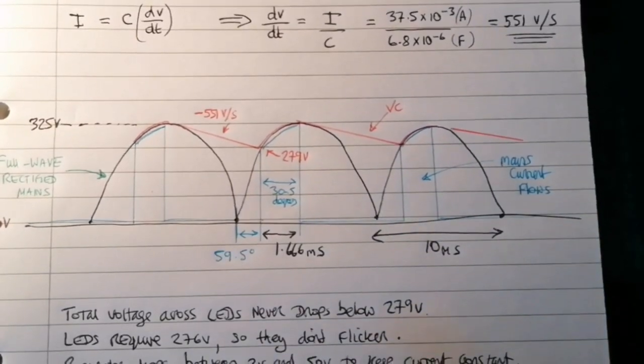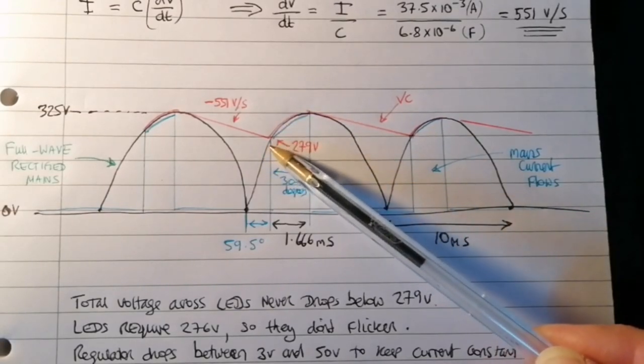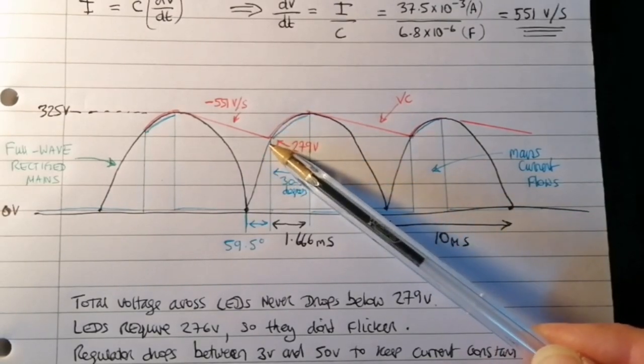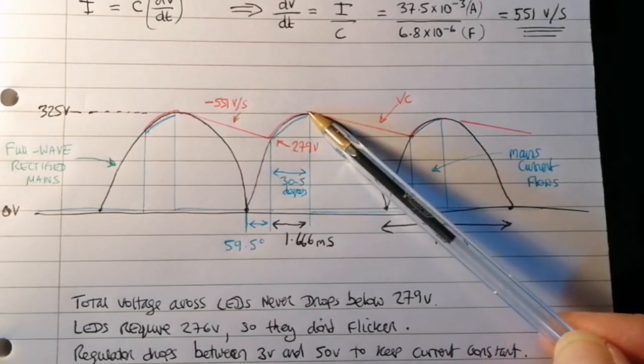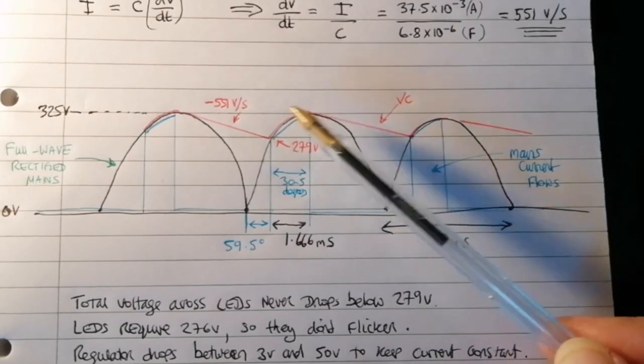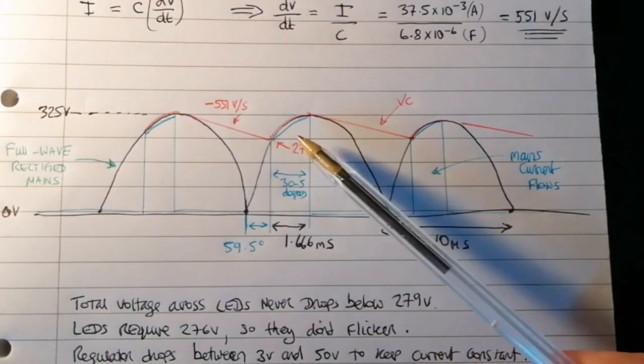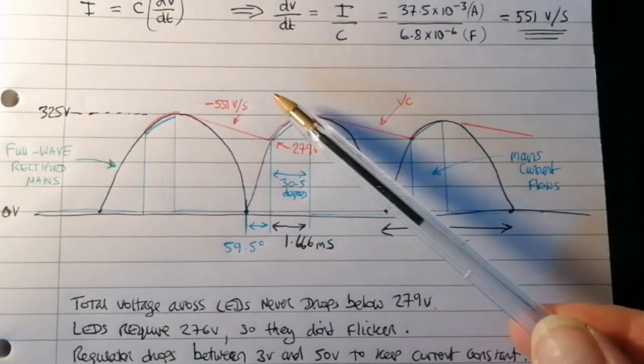So 30.5 degrees is only 1.666 milliseconds. So the current flows into the capacitor in these sort of like square-tooth waveforms. This is the current into the capacitor, the blue waveform, which is a very spiky, pulsey sort of waveform. Hence the poor power factor of the thing. But it means that the total voltage across the LEDs never drops below 279 volts, and they require 276 volts. So they don't flicker. They've always got a constant voltage across them and a constant current through them. And the regulator drops the rest. The regulator drops between the 276 and the 279, so that's 3 volts at the bottom of the waveform and 50 volts at the top of the waveform. And that keeps the current constant. So that 6.8 microfarad capacitor was chosen very carefully to make sure it does this.